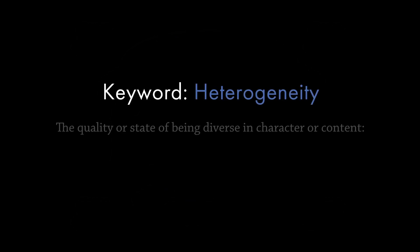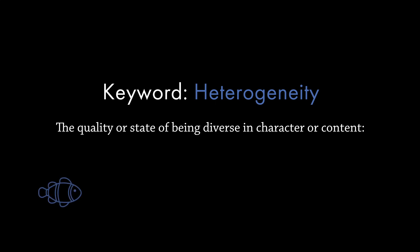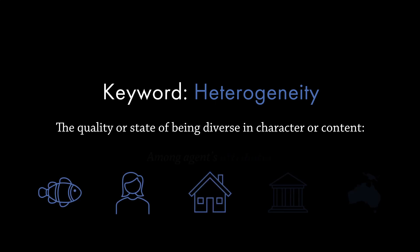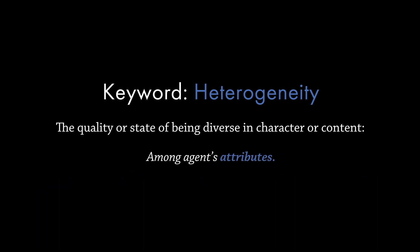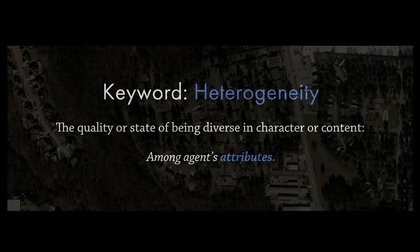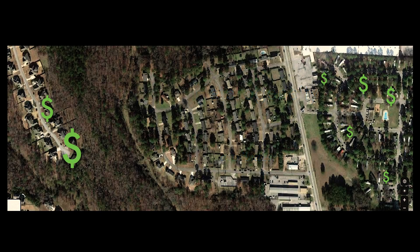First, heterogeneity can be defined as the quality or state of being diverse in character or content. In the context of agent-based modeling, we are particularly interested in heterogeneity among agents' attributes. These can include age, race, income level, experience, preferences, aspirations, geographic location, and any other salient differences among agents one might want to model. In this example, we can see spatial heterogeneity in both income levels, housing prices, and housing density.